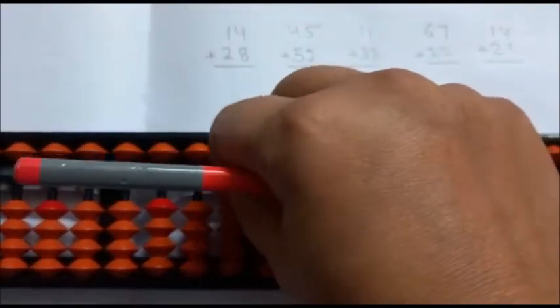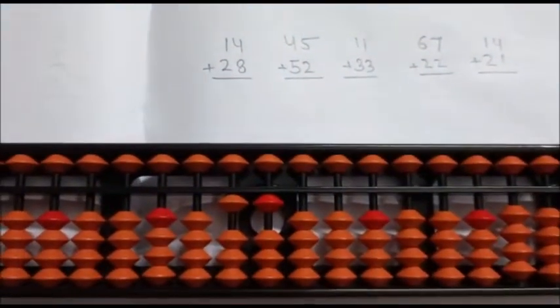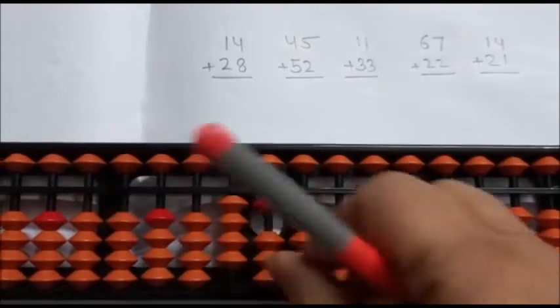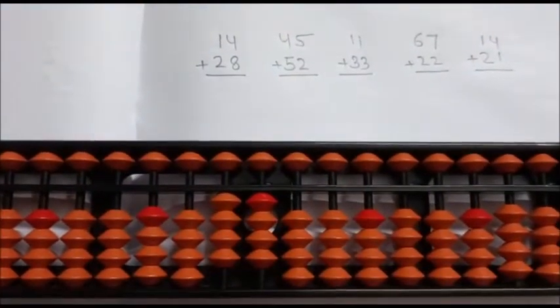Third question: 1, 1, 11 plus 33. 30 is direct. 3 is direct. Answer is 44.